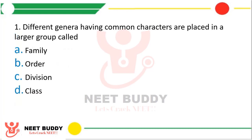Question 11. Different genera having common characteristics are placed in a larger group called: Option A, Family; Option B, Order; Option C, Division; or Option D, Class. The correct answer is Option A, Family.